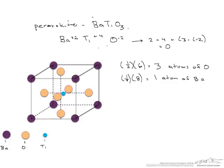And finally we have titanium, which is just 1 atom in the center. Therefore, we have barium, titanium, and 3 atoms of oxygen.